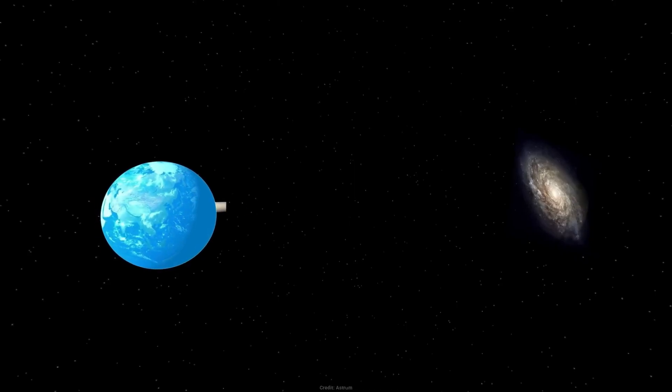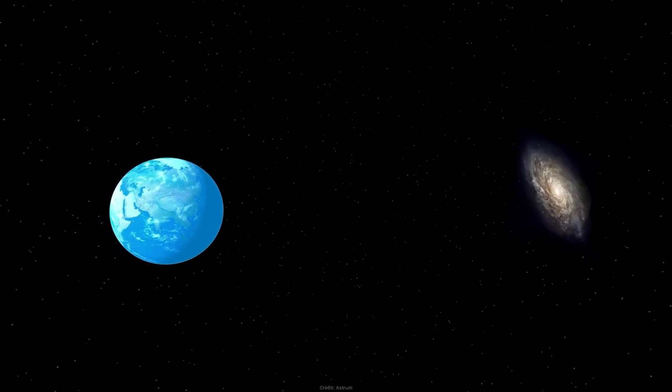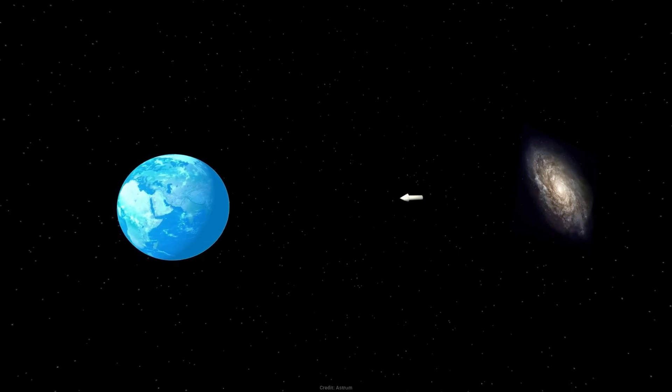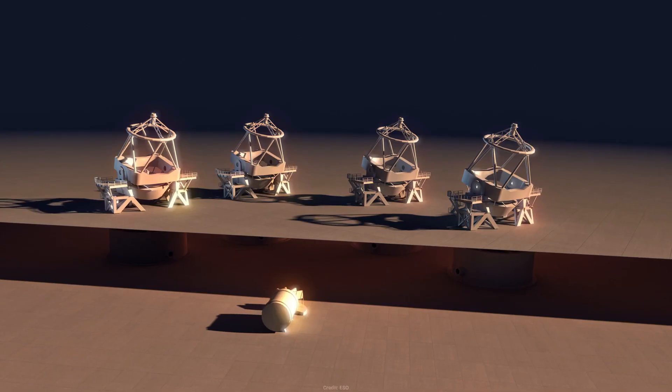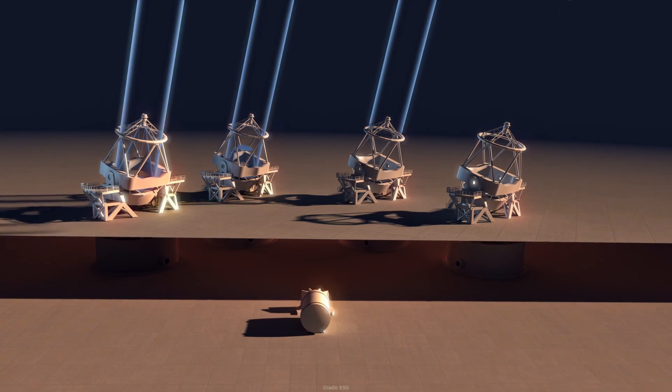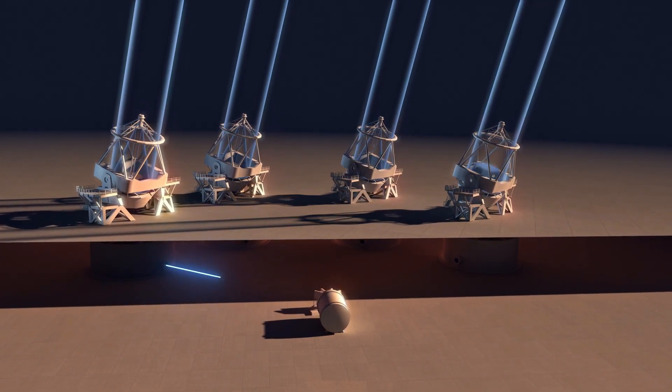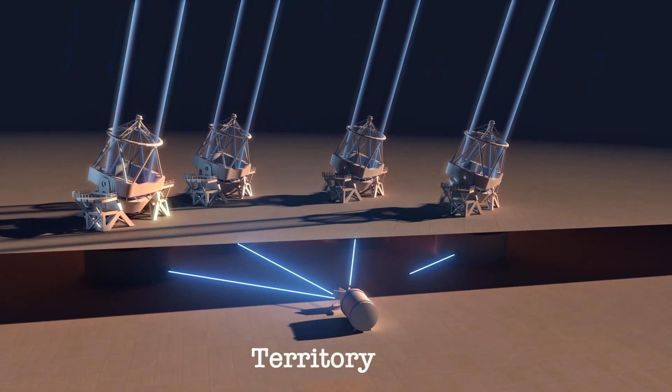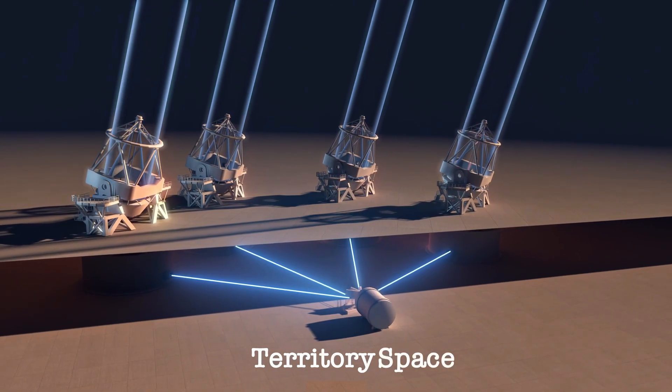But recently, we've been detecting an unusual intermittent signal from space, in a pattern never observed before. And here's where it gets fascinating. The signal keeps switching between three distinct states, or modes, making it an extremely rare appearance. Welcome to Territory. This is your space.